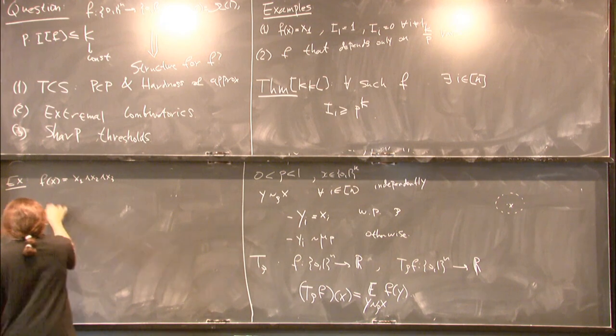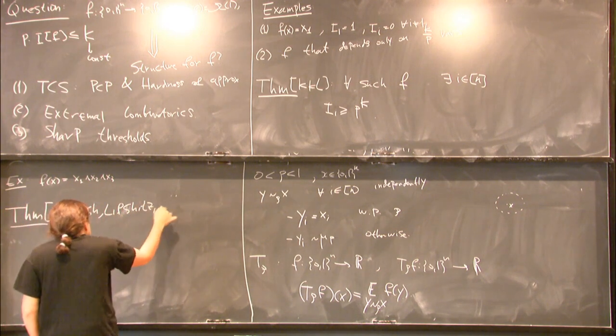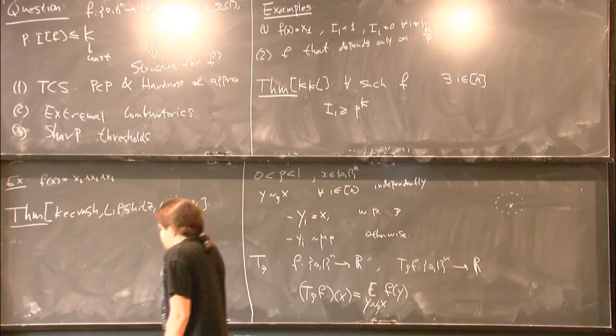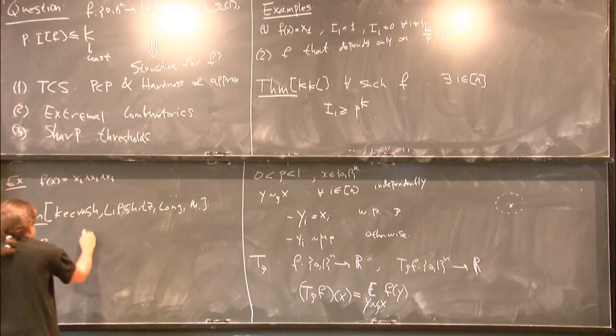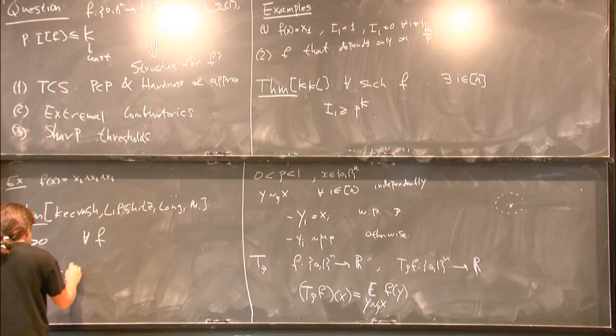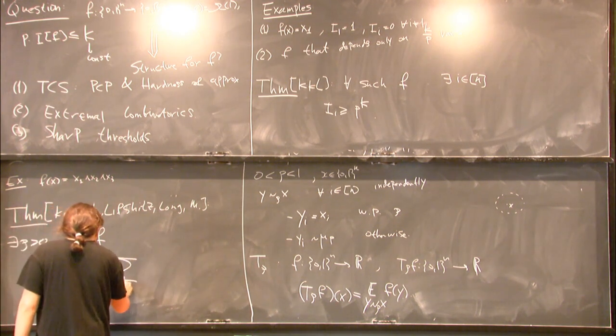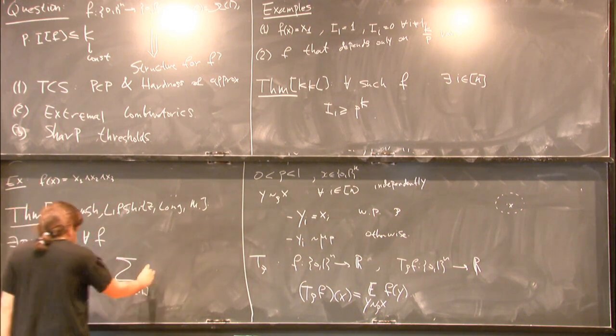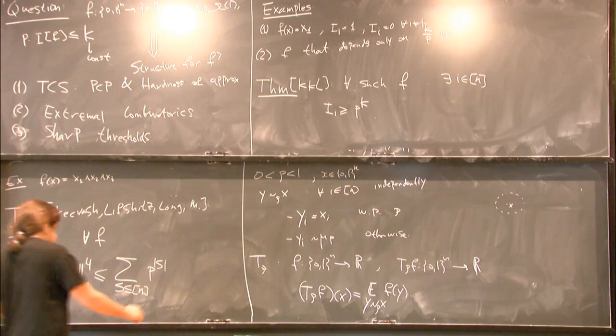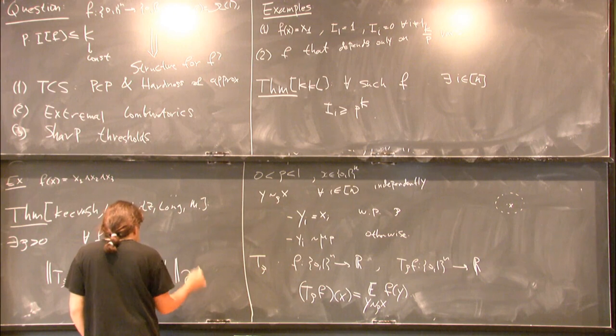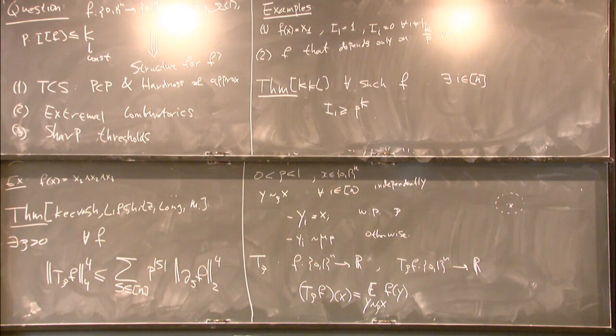This is the theorem. It's a joint work together with Peter Keevash, Noam Lifshitz, Dor Minzer, and myself. We proved that there exists rho absolute constant greater than zero, such that for every f, the fourth norm of T rho of f to the fourth is, at most, the sum over all coalitions. It's a weighted average, over all coalitions, of the effect that the coalition s has on the function f. And if you remember the derivatives that we defined at the beginning, this is precisely the derivative with respect to the set s of the function f, its two norm to the fourth.